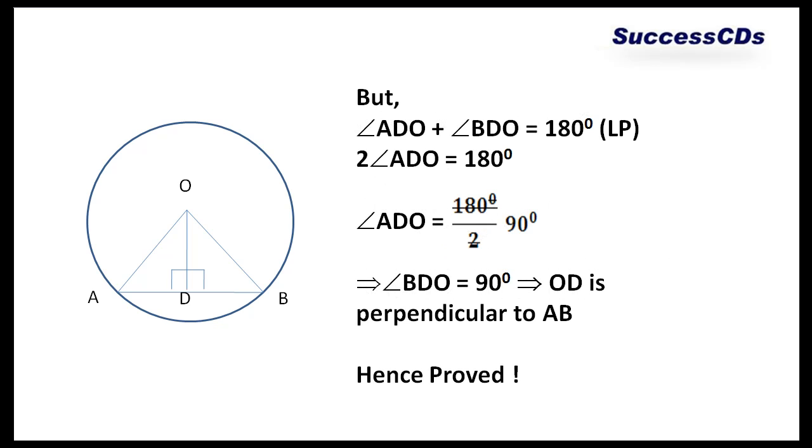But, if we look carefully, we have angle ADO plus angle BDO equals 180 degrees because they form a linear pair. This implies we can write it like 2 times angle ADO equals 180 degrees. Angle ADO then is reduced to 90 degrees only.